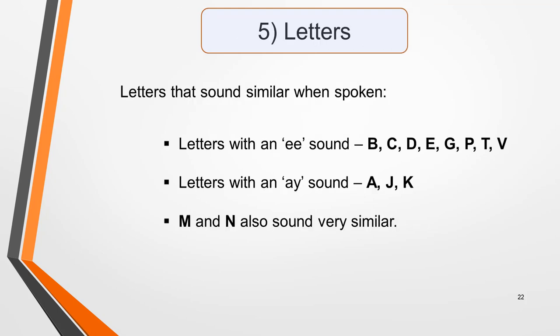Sometimes the answer to a listening question will be a name, such as a place name or a person's surname, which may be spelt out in the recording. Hence, you must be able to recognise the different letter sounds. Pay particular attention to letters that sound similar when spoken — for example, letters with the E sound: B, C, D, E, G, P, T, and V. Letters with an A sound such as A, J, K. M and N also sound very similar. For practice, listen to these two sentences and write down the names spelt out, then check your answers on the next slide. Remember that names of people and places always start with a capital letter.